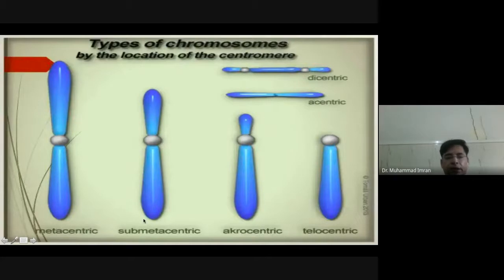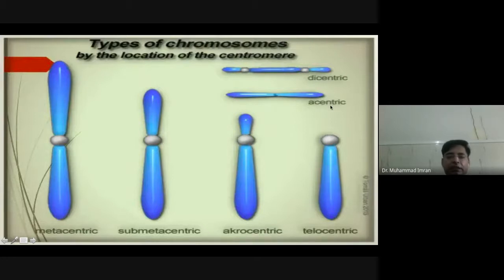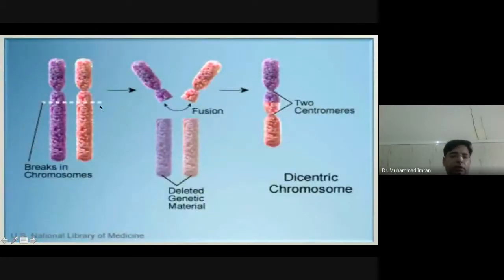In metacentric chromosomes both arms of the chromatid have equal length; in sub-metacentric they are unequal but relatively close; in acrocentric one arm is very short and one is long; telocentric are not present in humans but present in mice. Some chromosomes have two centromeres — these are known as dicentric chromosomes — and some have no centromere, known as acentric chromosomes. A dicentric chromosome results from breaking and fusing two chromosomes.